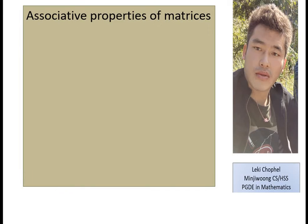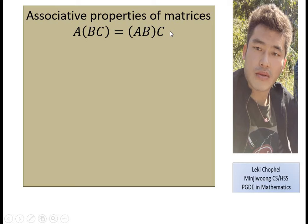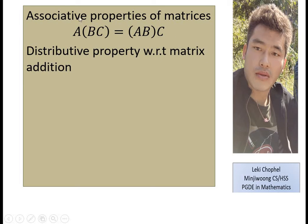Another important property is the associative property. If there are three matrices A, B, and C, you can multiply in any order: A×(B×C) = (A×B)×C. Whether you multiply B and C first then with A, or A and B first then with C, your answer will be the same.